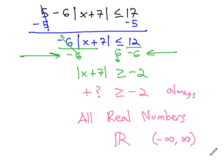Be careful of these special cases when you're solving absolute value inequalities. If you end up with an absolute value greater than or less than a negative number, take a moment to look at it and ask if it's possible, always, or never.